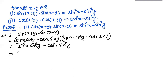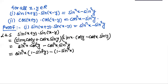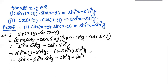We write sin²x cos²y as sin²x(1 − sin²y), and cos²x sin²y as (1 − sin²x) sin²y. Expanding: sin²x − sin²x sin²y − sin²y + sin²x sin²y, which simplifies to sin²x − sin²y. This equals the right hand side, so the identity is proved.